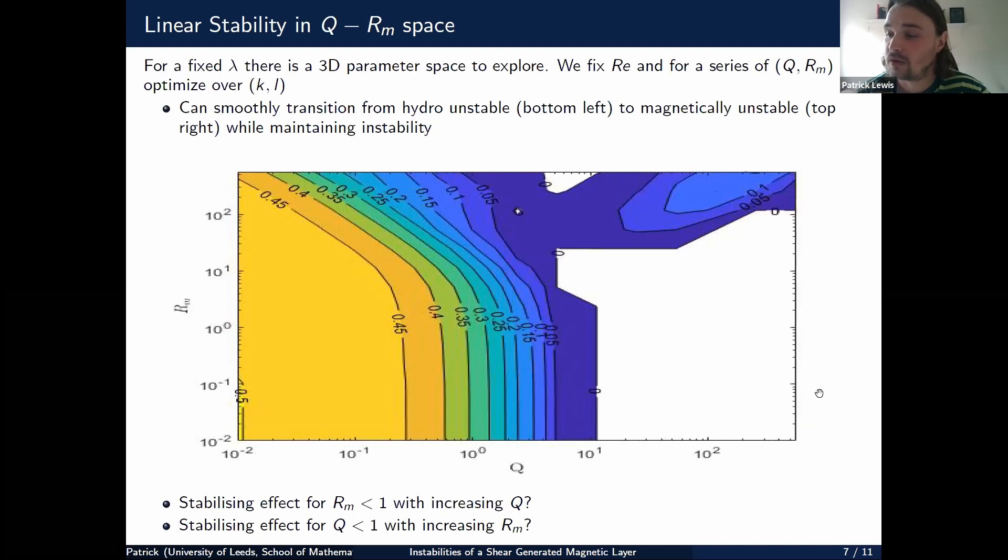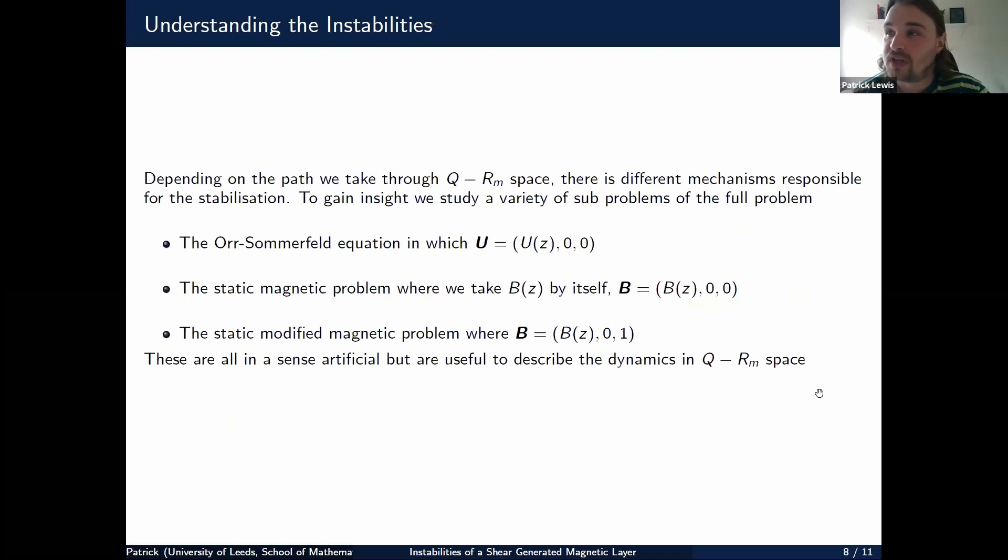To attempt to explain what happens, we consider a set of sub-problems. Depending on the path we take through Q-Rm space, different mechanisms are responsible for stabilization. To gain insight, we study sub-problems: the Orr-Sommerfeld equation where we solve for the basic state; a static magnetic problem with Bz in the absence of flow; and a static modified magnetic problem with Bz and our vertical uniform magnetic field. These problems are artificial but useful to help describe the dynamics in Q-Rm space and understand what causes these instabilities.